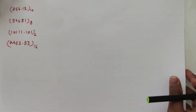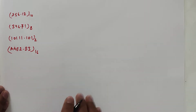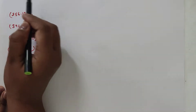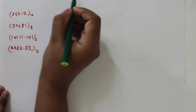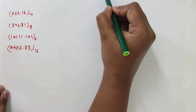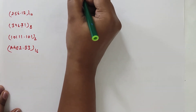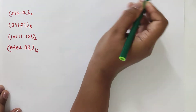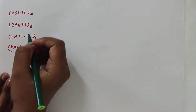Now we will learn how to write a number in terms of a sum of products of place weight value and digit value. We have taken some examples here.